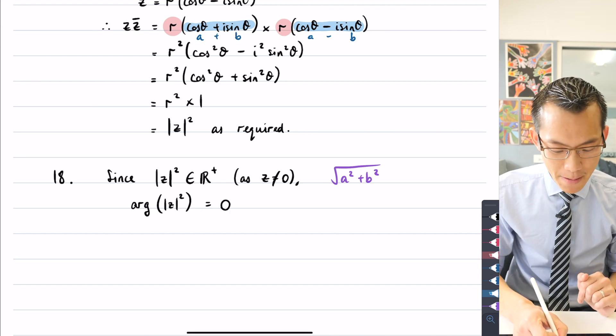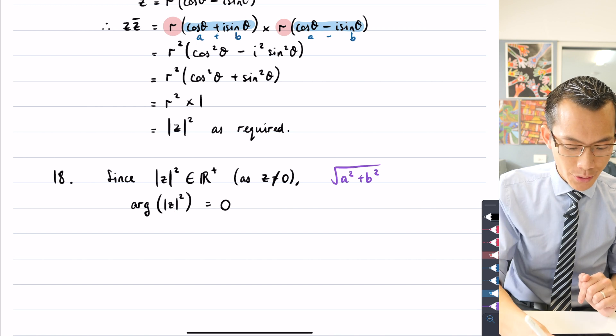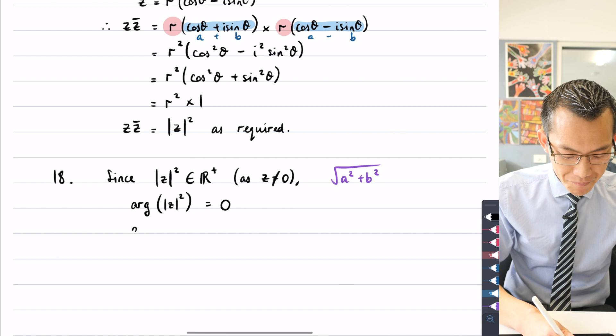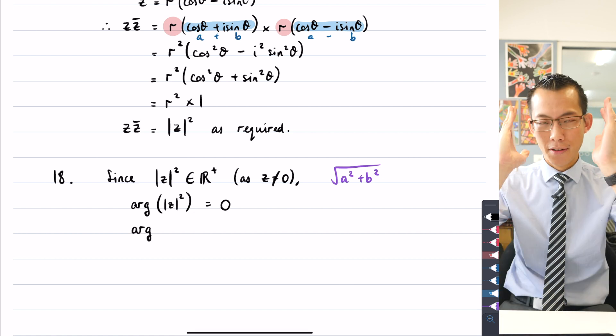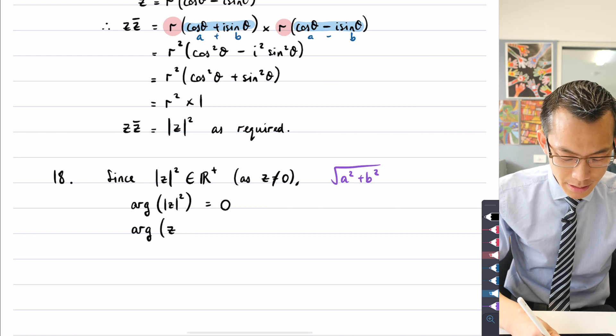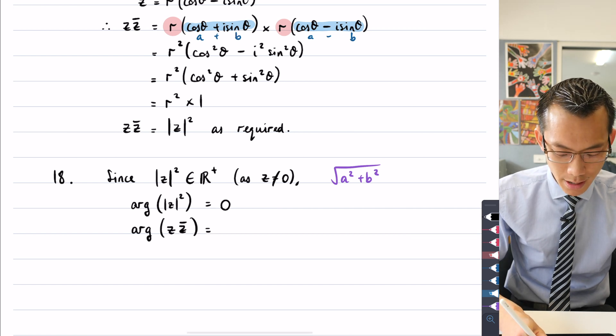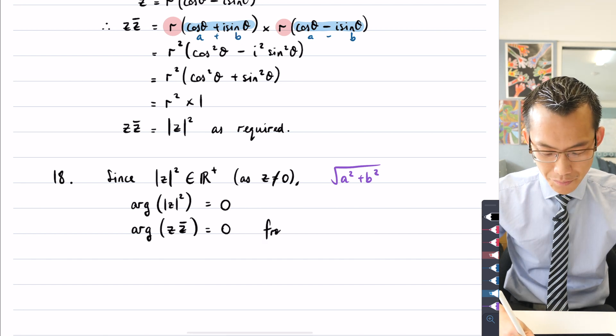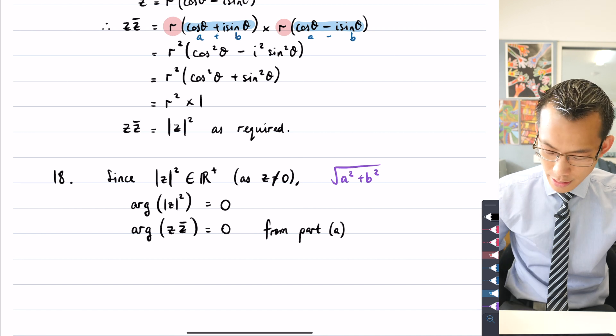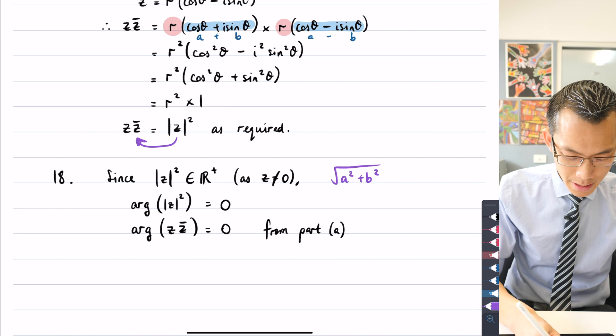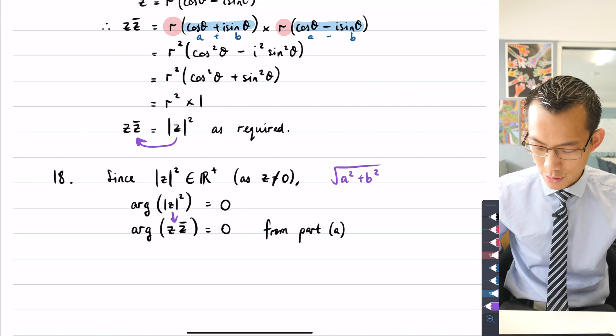But from part a, I can substitute this for z times its conjugate. So I can say that not just the argument of the modulus of z squared, but the argument of z times its conjugate, since those are the same, equals zero from part a. So what I'm doing is, just like I noticed that these two things are equal, I can say that these two things are equal. That's me using part a.